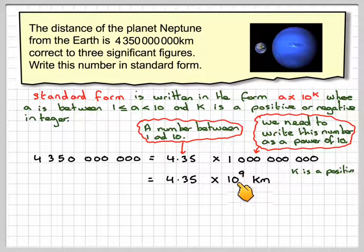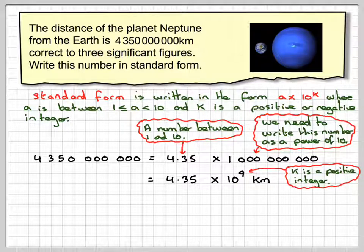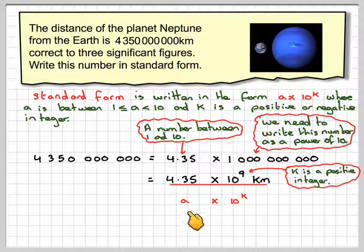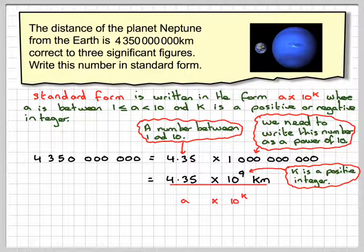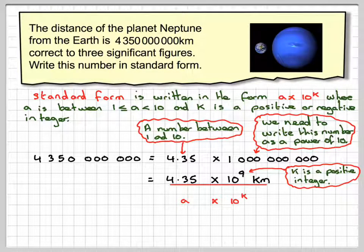Notice now that K is a positive integer. And we've now written it in the correct format, A times 10 to the K. So there's been a video to show you how to write a very large number in what's known as standard form. I hope you've understood, and I thank you very much for watching.